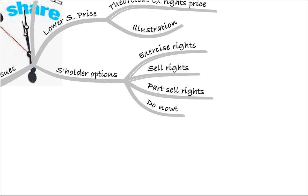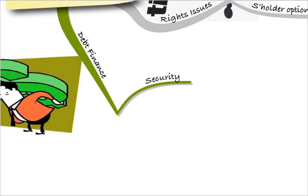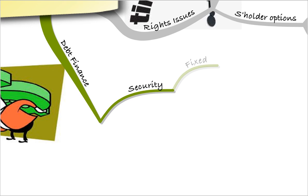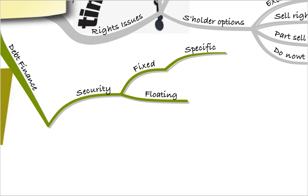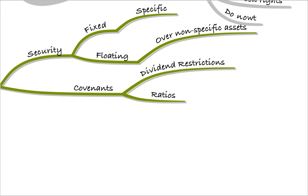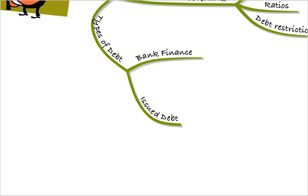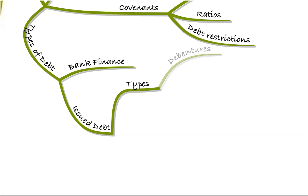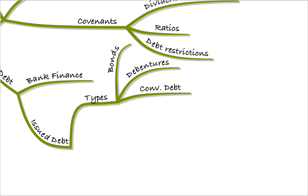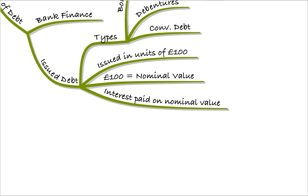Moving to debt — we'll talk in great detail about it later. For now, understand there are different types of debt. When it comes to security, you might have fixed security over specific business assets, or floating security over non-specific business assets. There may also be covenants in debt, particularly bank debt, such as dividend restrictions, ratio restrictions, or debt restrictions. Types of debt include simple bank finance or issued debt — debentures, bonds, or convertible debt. Debt is always issued in units of 100, which is the nominal value, and interest is always paid on the nominal value.